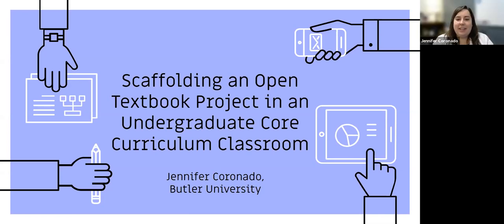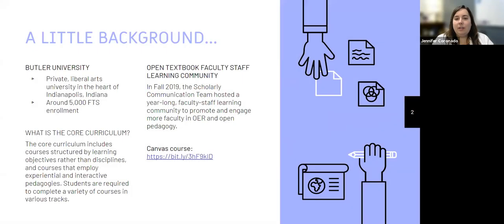Thank you, and thank you everybody for joining. As Stephanie mentioned, this is 'Scaffolding an Open Textbook Project in an Undergraduate Core Curriculum Classroom.' I know that's a bit of a tongue twister, but let's get started. A little bit of background about who I am: I'm Jennifer, a scholarly communications librarian at Butler University. We're a private liberal arts university in the heart of Indianapolis, Indiana, with about 5,000 full-time students enrolled.